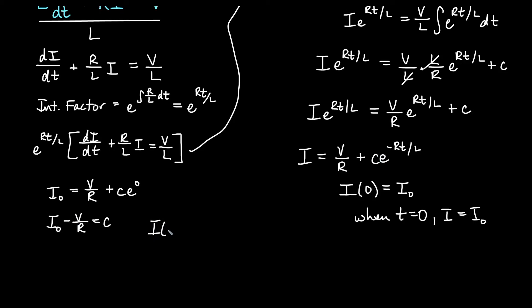If I take that constant and I put it into my general solution, then I would get I as a function of time is going to be V over R plus I sub zero minus V over R e to the negative RT over L. And you could do some things with factoring out V over R if you want with this. We'll just go ahead and leave this as it is.